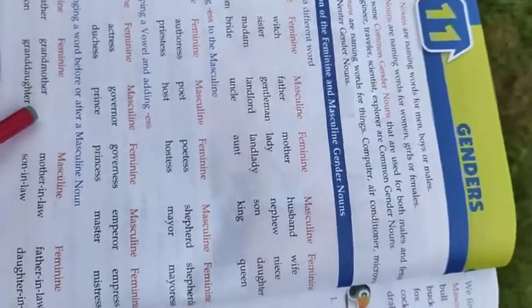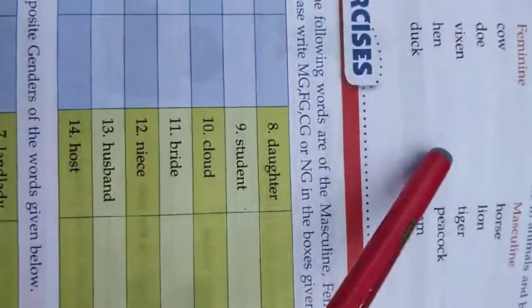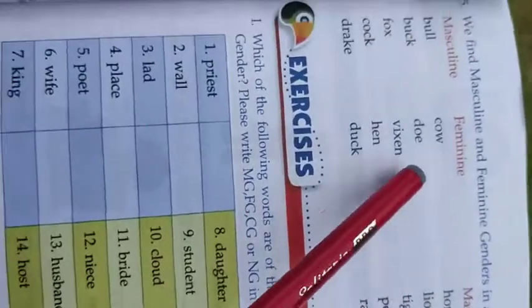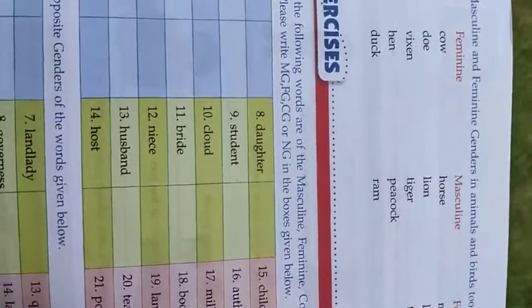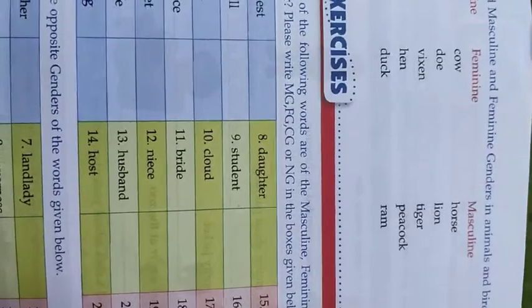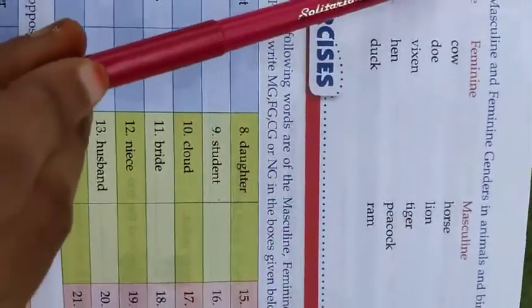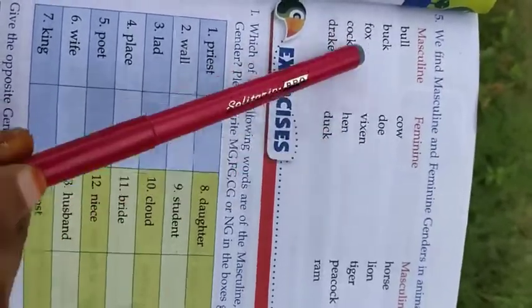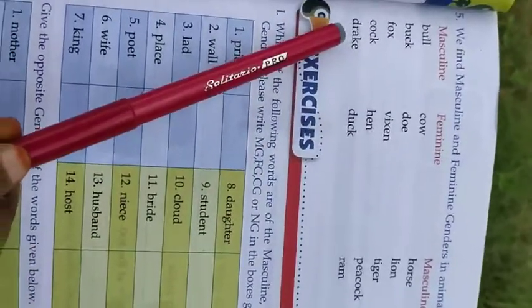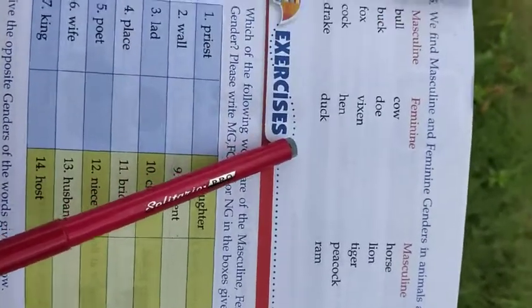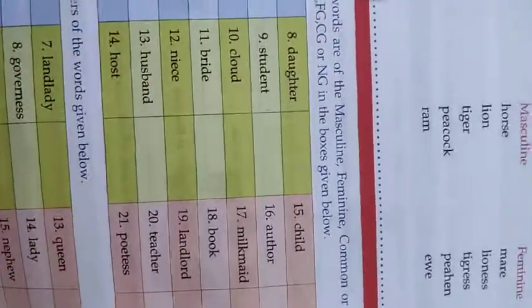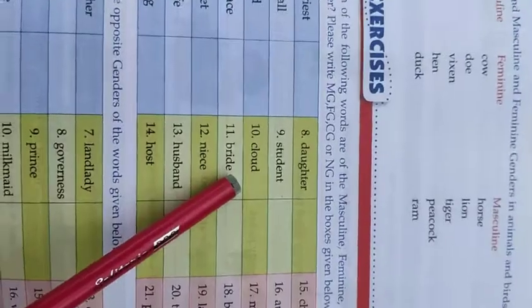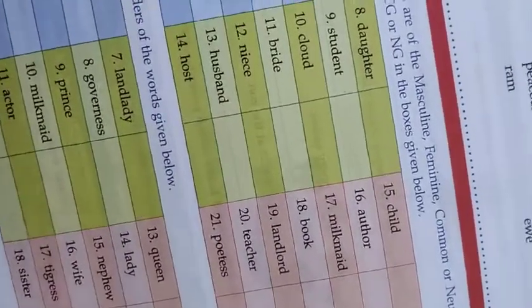The fifth point is that we find masculine and feminine genders in animals and birds too. For example: bull/cow, buck/doe, fox/vixen, cock/hen, drake/duck. Please read Chapter 11 on Genders and go through exercises one and two in your English grammar textbook. Thank you.